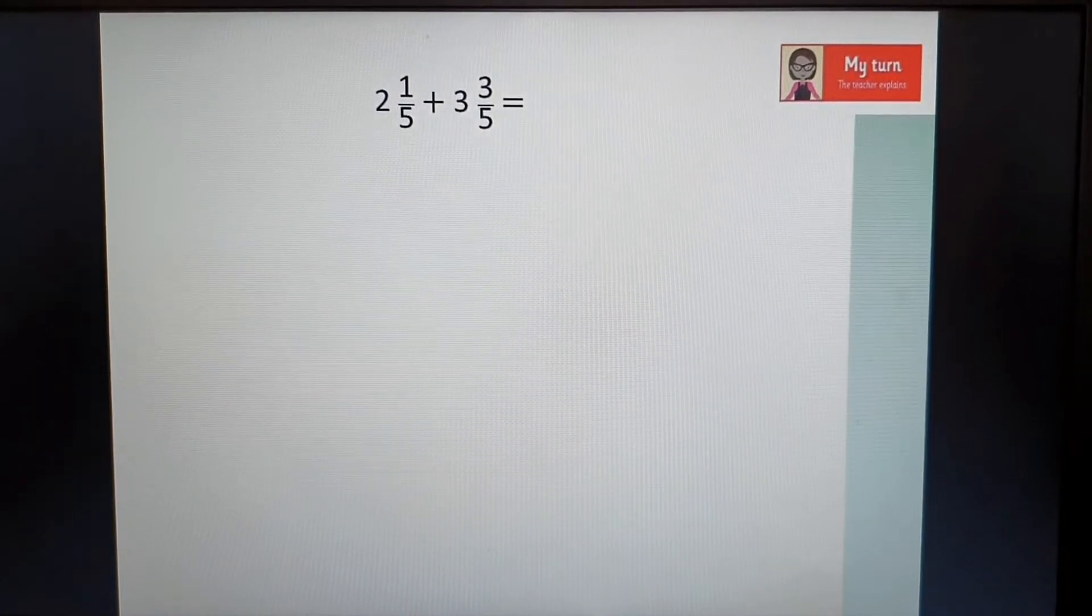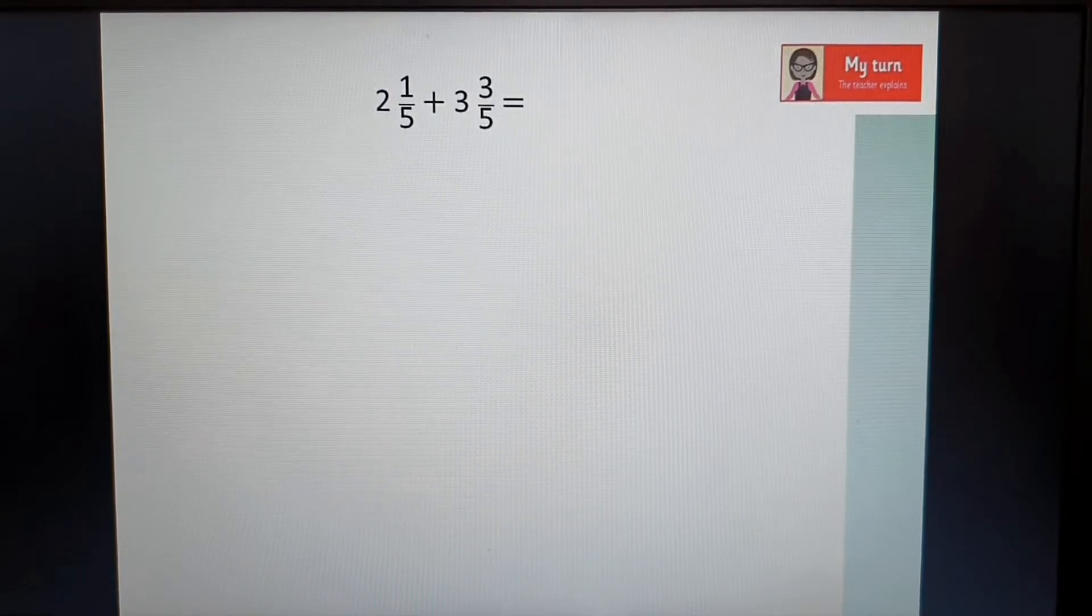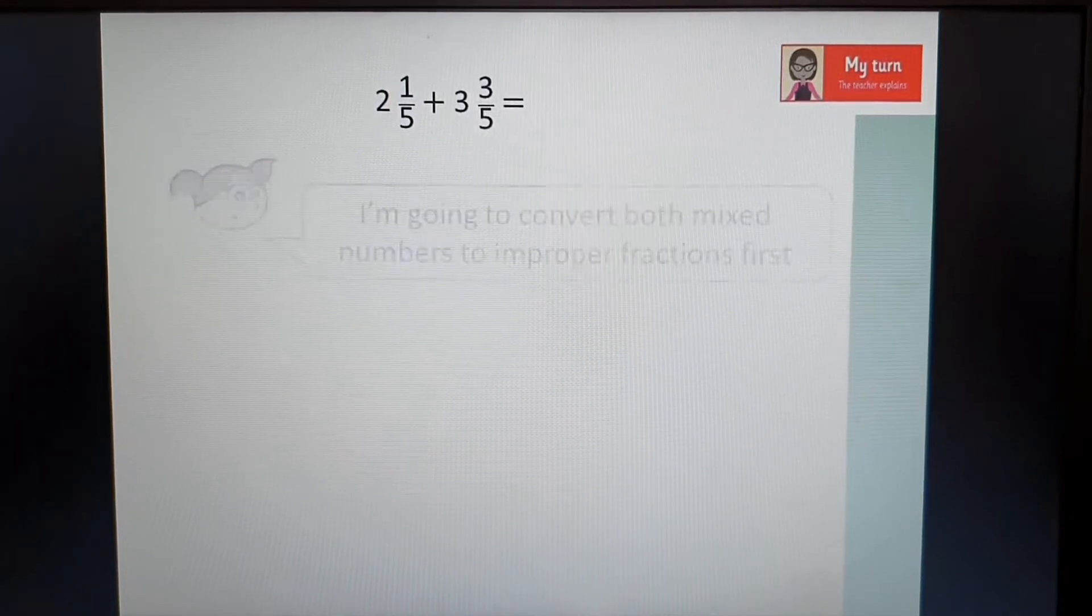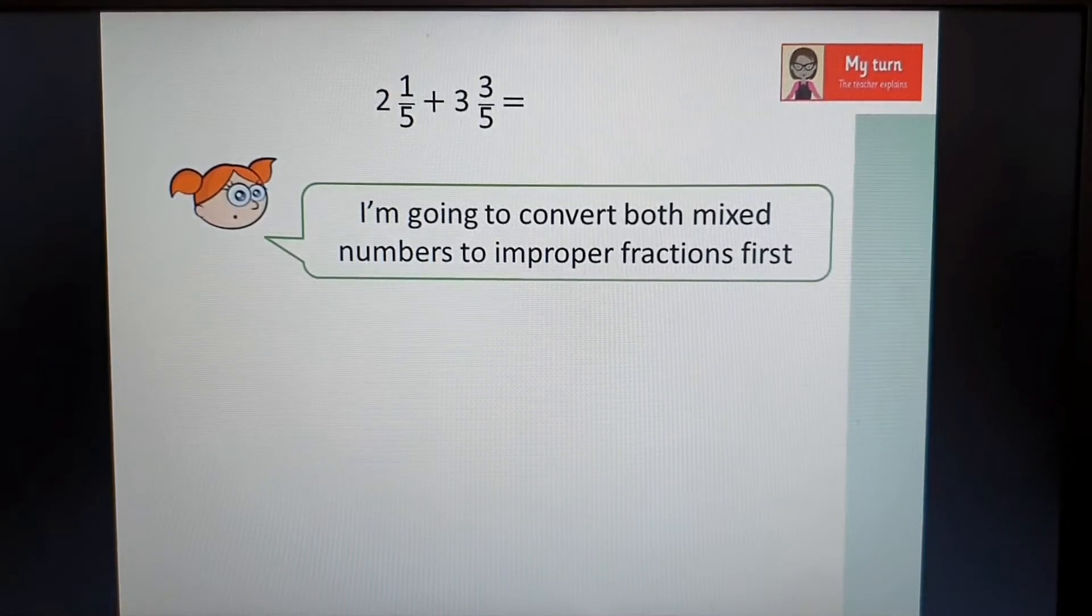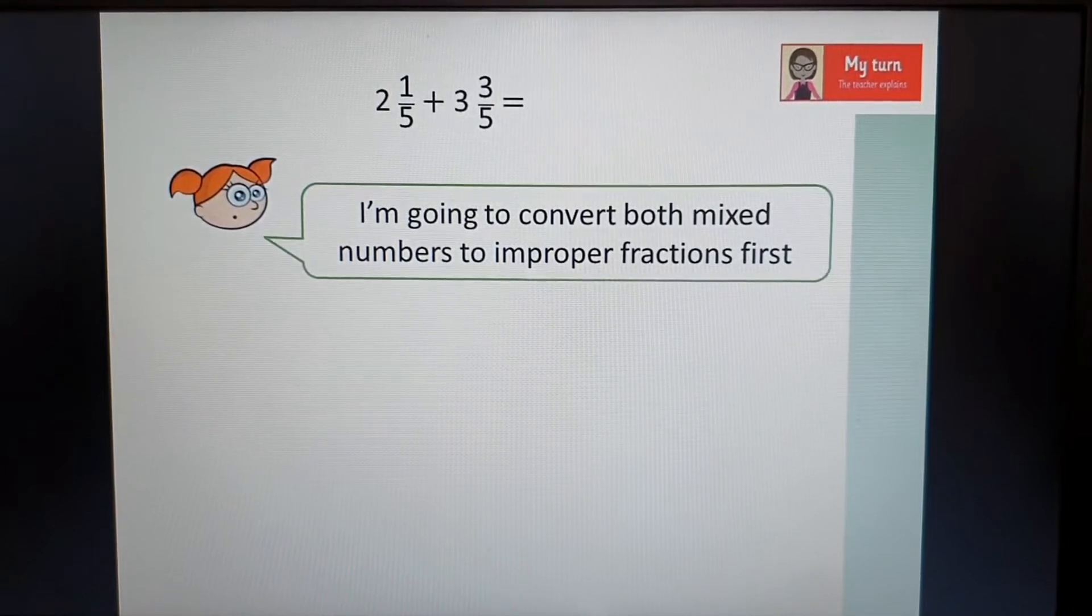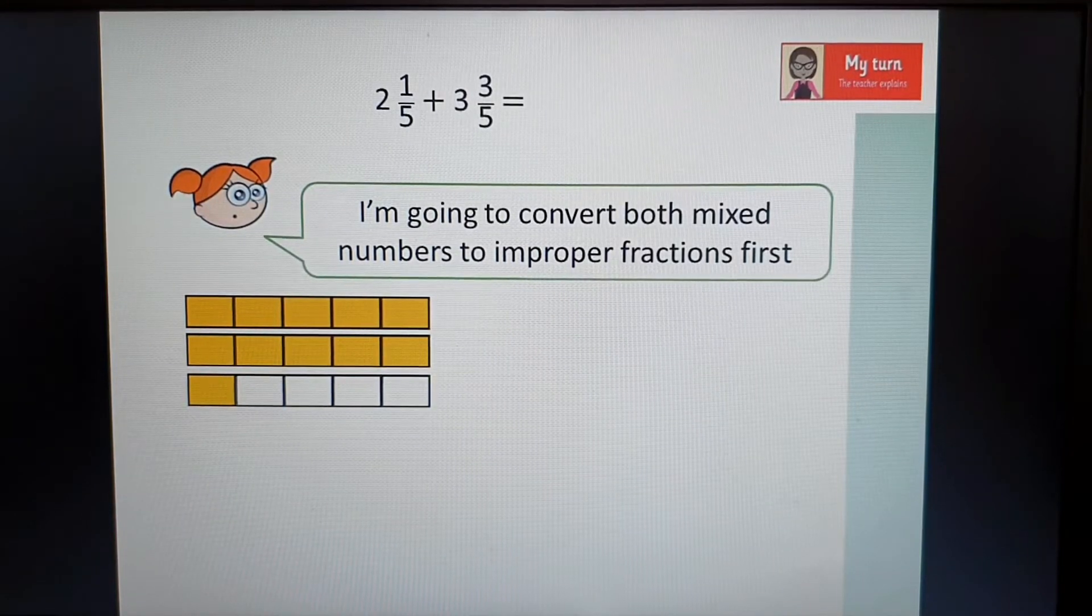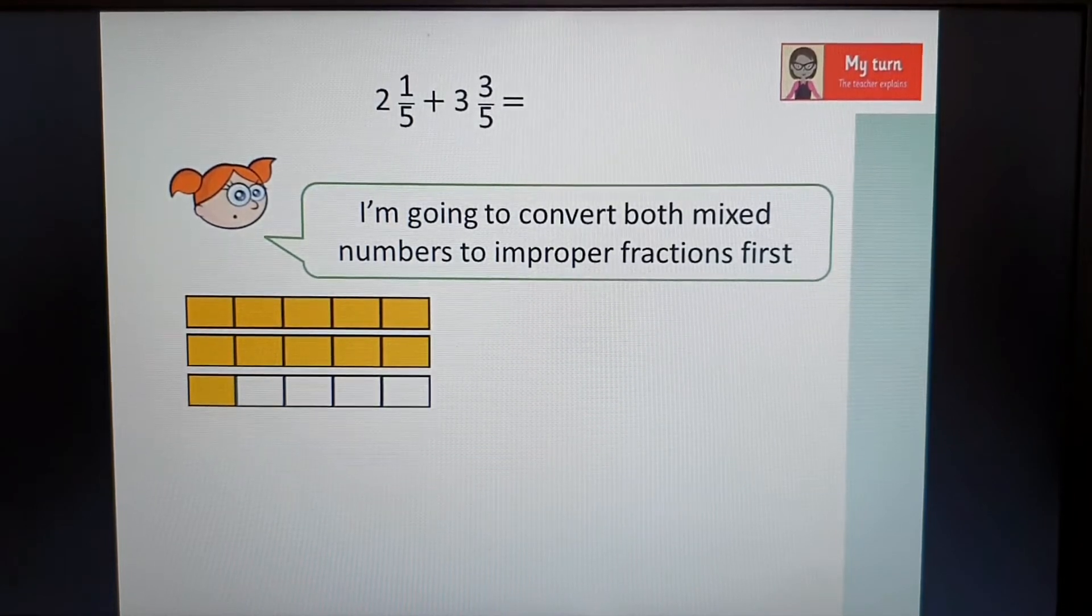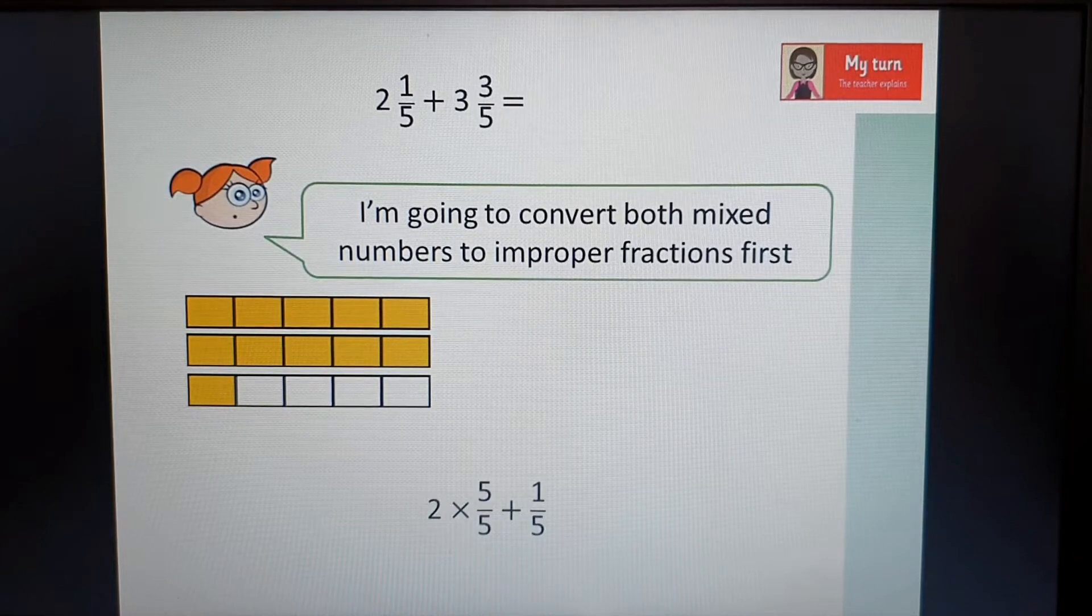This is my turn. I'm going to show you how we add two mixed number fractions. So we have 2 1/5 and we have 3 3/5. I'm going to convert both mixed numbers to improper fractions first. So I'm going to change both of them into a top heavy fraction. So my first one is set out here. I've got my two wholes, my two yellow bars and I've got my one fifth.